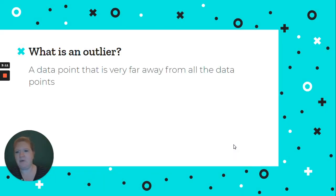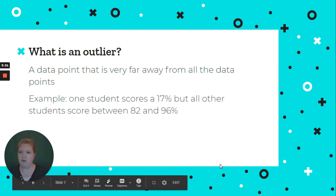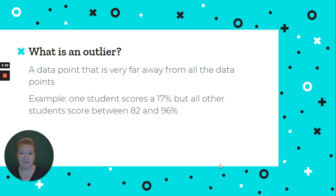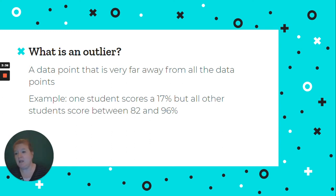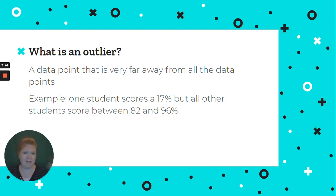So what's an outlier? It's a data point that's very far away from the others. You can see when I first started, my results were all around 200 to high 200s, and then all of a sudden I got one that was 400-something — that could be considered an outlier. For example, if I gave a test and one student scored a 17 but everyone else scored between 82 and 96, that 17 is an outlier. In the reaction time example, if all my results are around 200–300 and then I had one that was 1,000 — that's weird, that's an outlier.